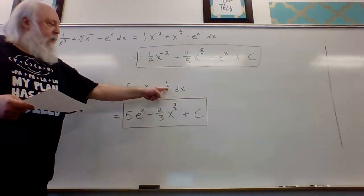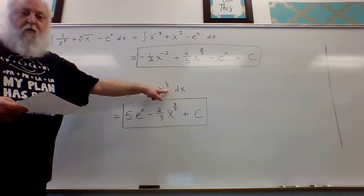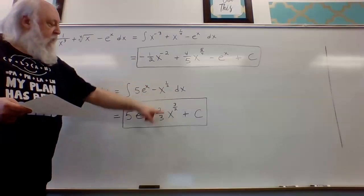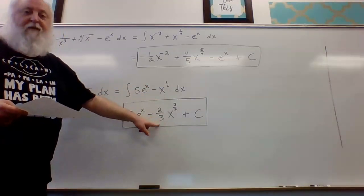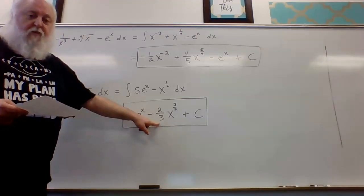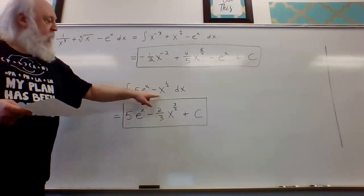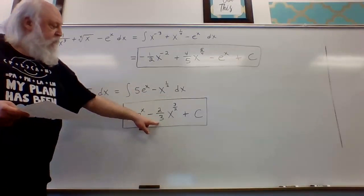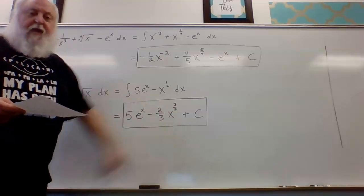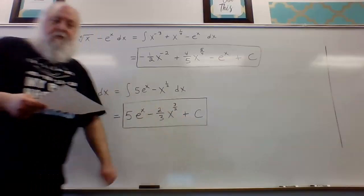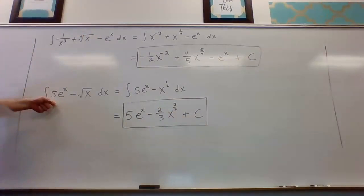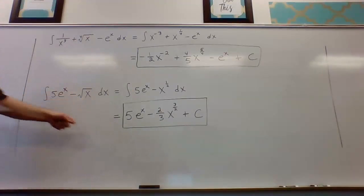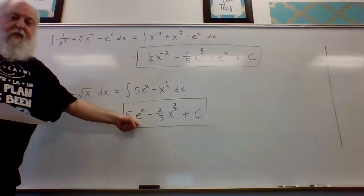For the antiderivative of x to the one-half, we add one to the exponent to get three-halves, then divide by three-halves, which is the same as multiplying by two-thirds. So the antiderivative of minus x to the one-half is minus two-thirds times x to the three-halves. We add the arbitrary constant c, giving the final answer shown in the rectangle.